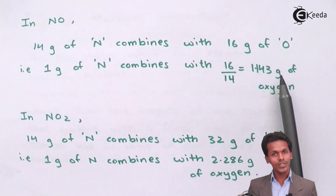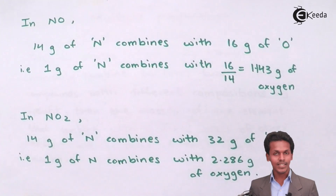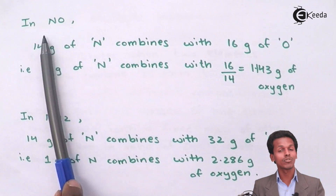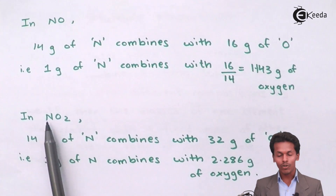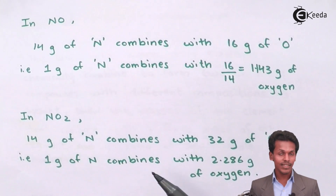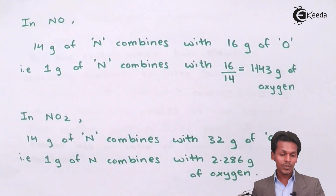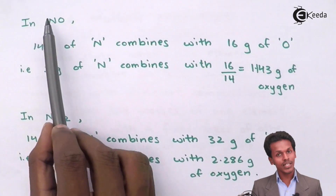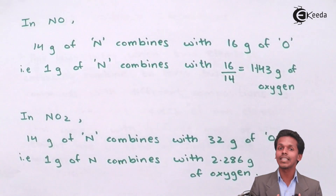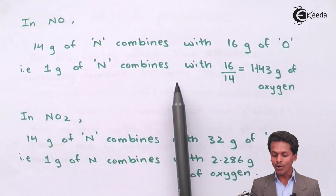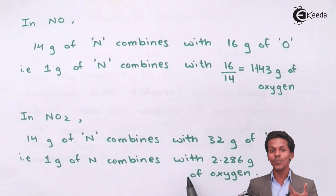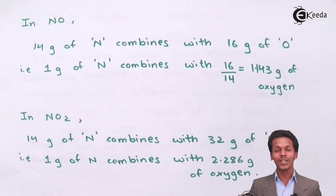For 1 gram of nitrogen in NO2, we get 2.286 grams of oxygen. So we have two values: 1.143 grams of oxygen for nitrogen monoxide, and 2.286 grams of oxygen for nitrogen dioxide. In both cases, nitrogen has a fixed value of 1 gram, while the oxygen amount is variable and changing.